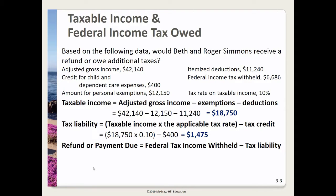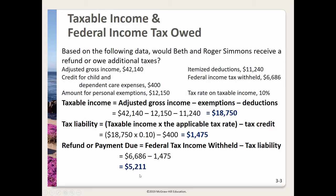Next we figure out whether this family gets a refund or needs to pay more taxes. We'll take the federal tax income withheld — $6,686 withheld through their paychecks — minus the tax liability of $1,475. Taking $6,686 minus $1,475, we get $5,211. Since the government withheld $6,686 but they only owe $1,475, they should expect a refund of $5,211.